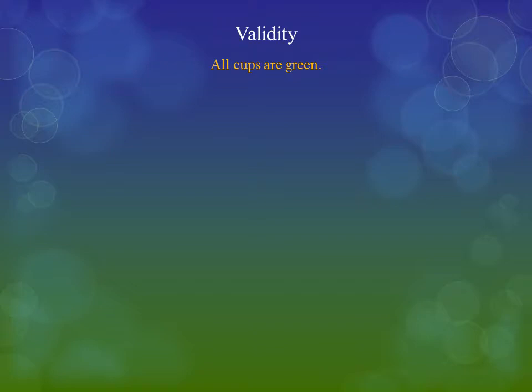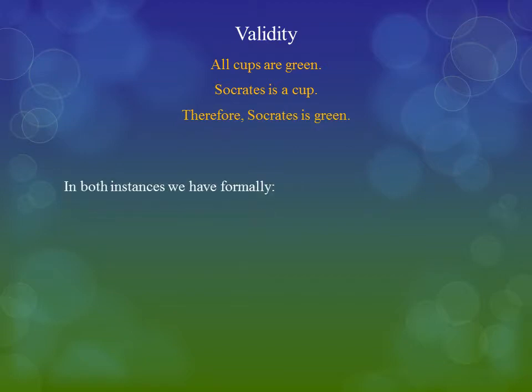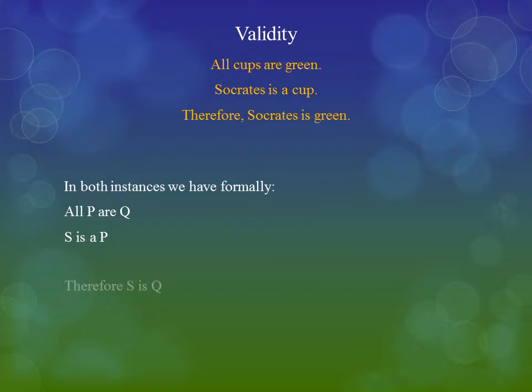Consider the following case: All cups are green. Socrates is a cup. Therefore, Socrates is green. Now, that may sound silly, but in fact this is exactly the same logical structure as the previous case, and we have to say that this is equally valid. All P are Q. S is a P. Therefore, S is Q.